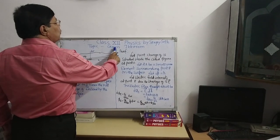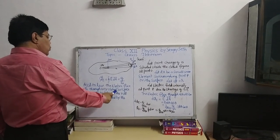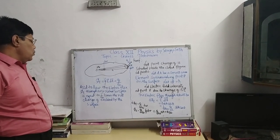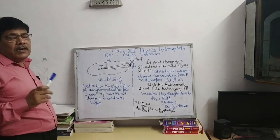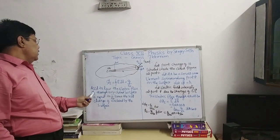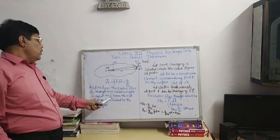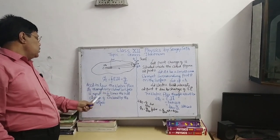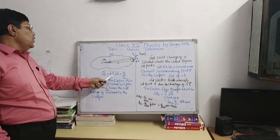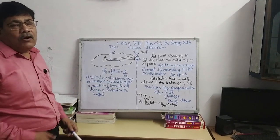Now I am going to explain Gauss theorem. According to Gauss theorem, electric flux through an enclosed surface is equal to 1 upon epsilon naught times the net charge enclosed by the surface. That is, phi E equal to the integration of E dot dA is equal to Q upon epsilon naught. This is the Gauss theorem.